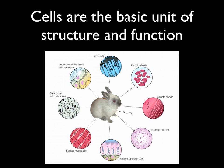Cells are also called the basic unit of life because they're the basic unit of structure and function in living things. Here's a rabbit made up of trillions and trillions of cells, but each of those cells belongs to a particular kind of tissue. For example, cells that make up bone tissue, which are called osteocytes, have a particular structure because of their job as part of the support system for the animal's body. Red blood cells have another type of structure because they have the function of circulating nutrients in the blood.